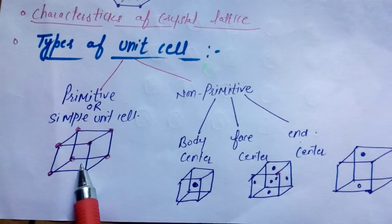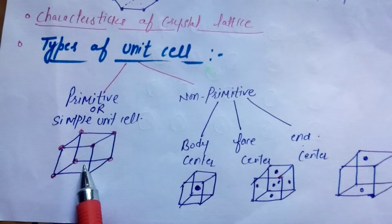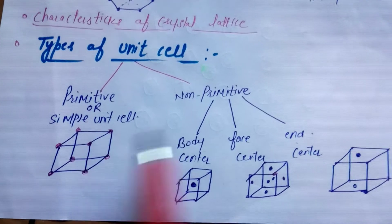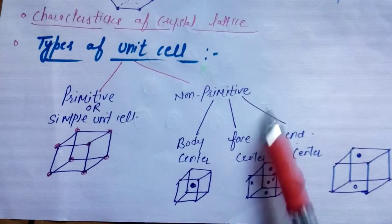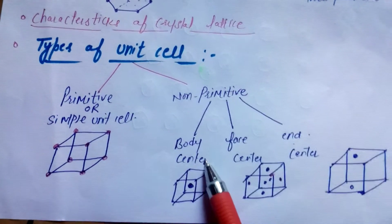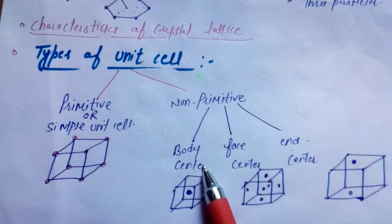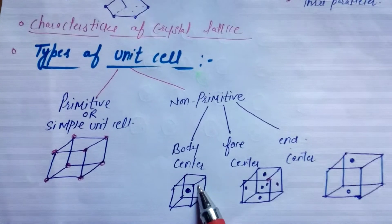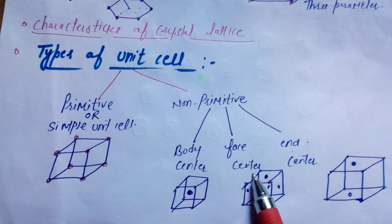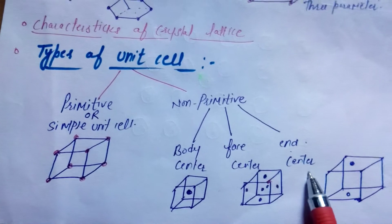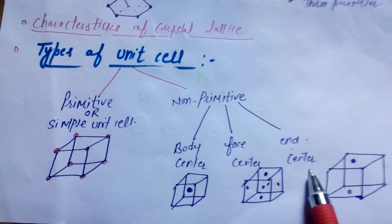The primitive unit cell is also called the simple unit cell. The non-primitive unit cell is of three types: body center, face center, and end center.